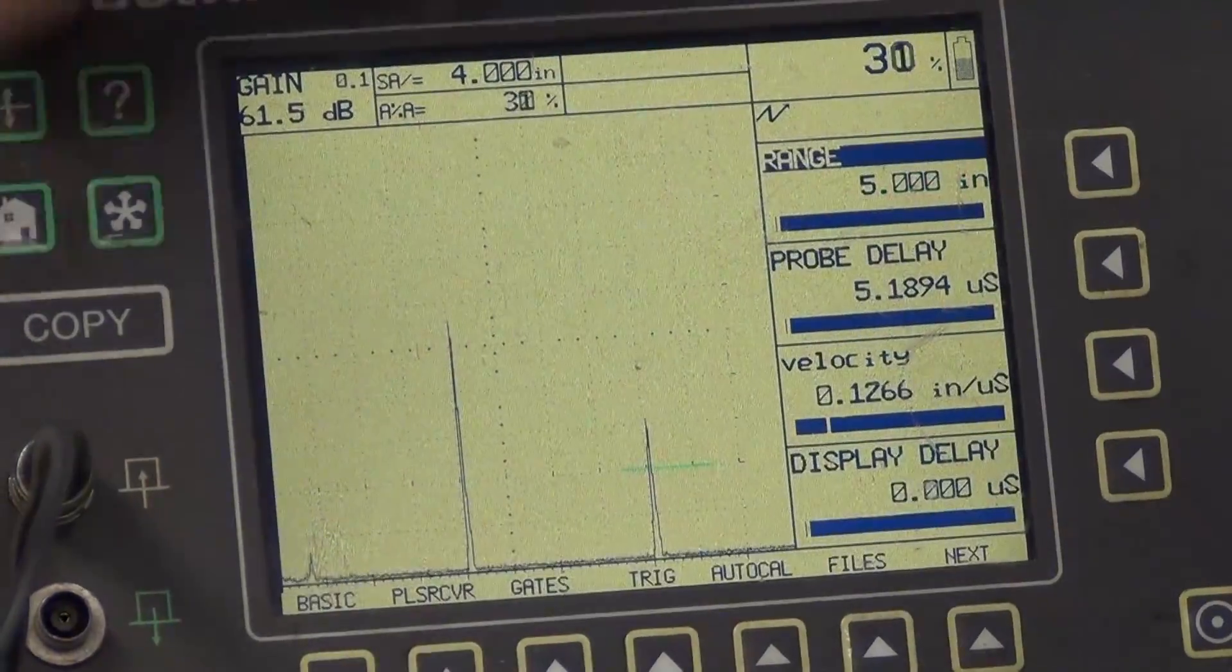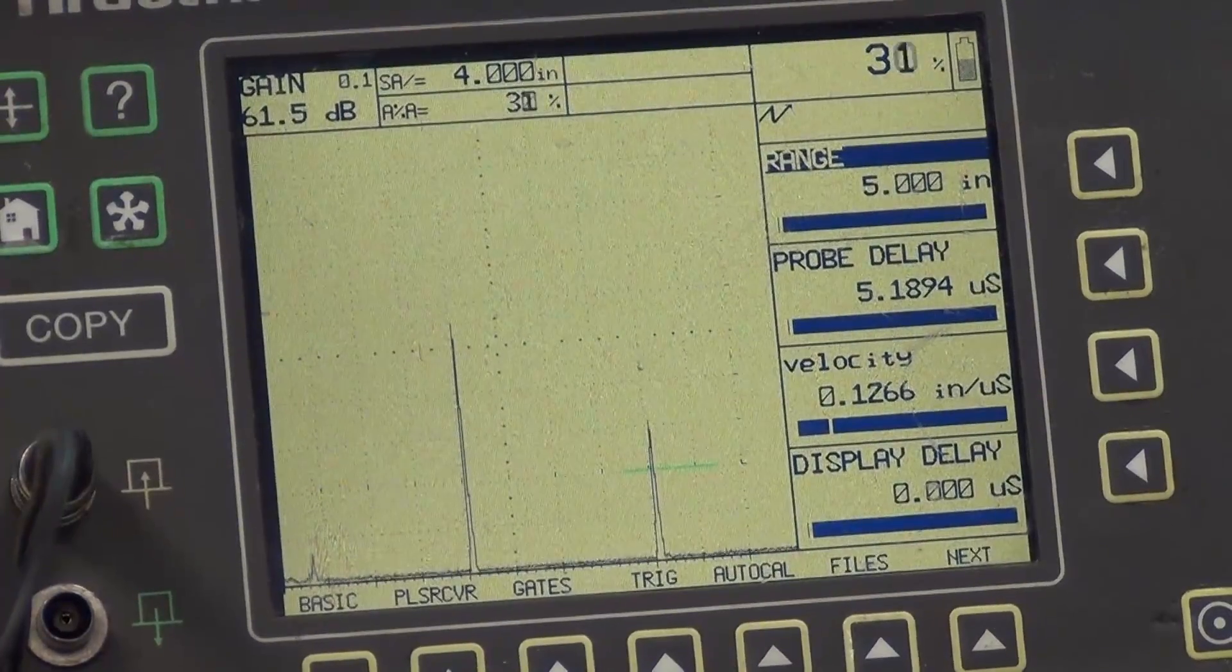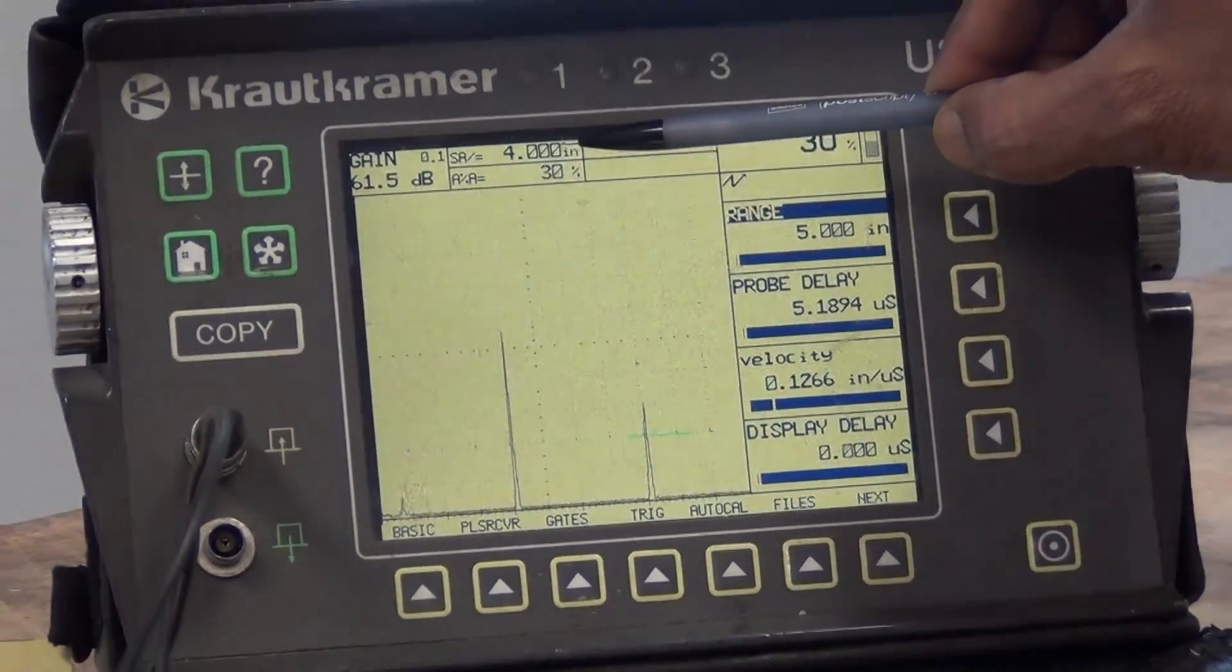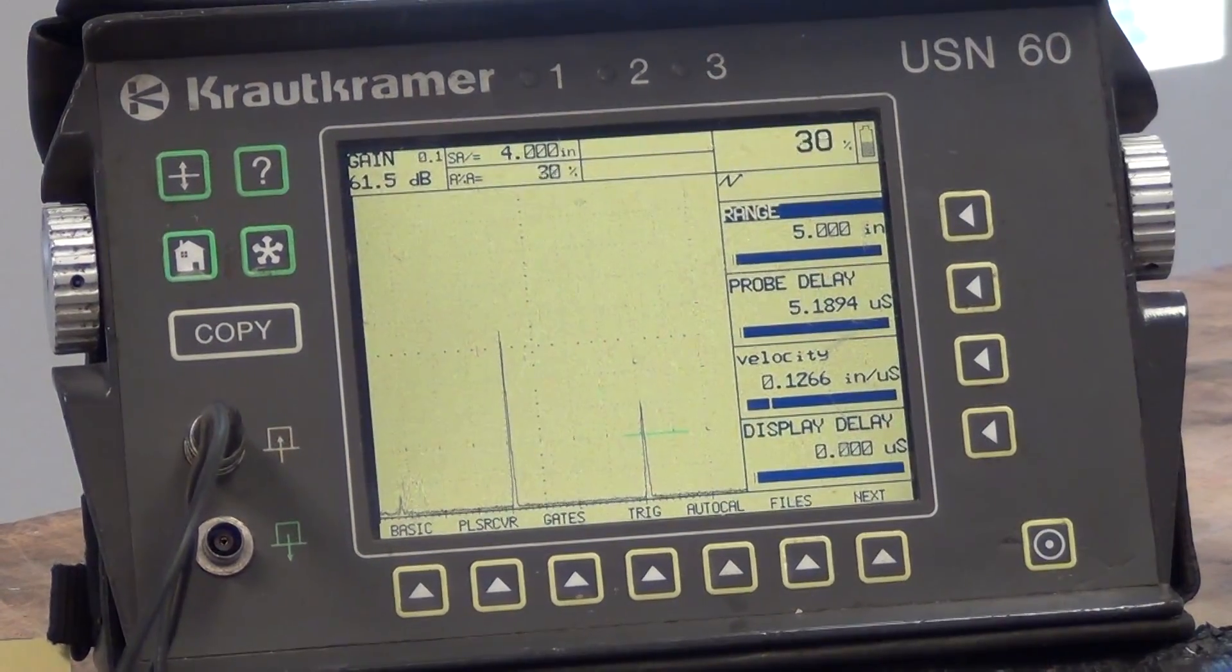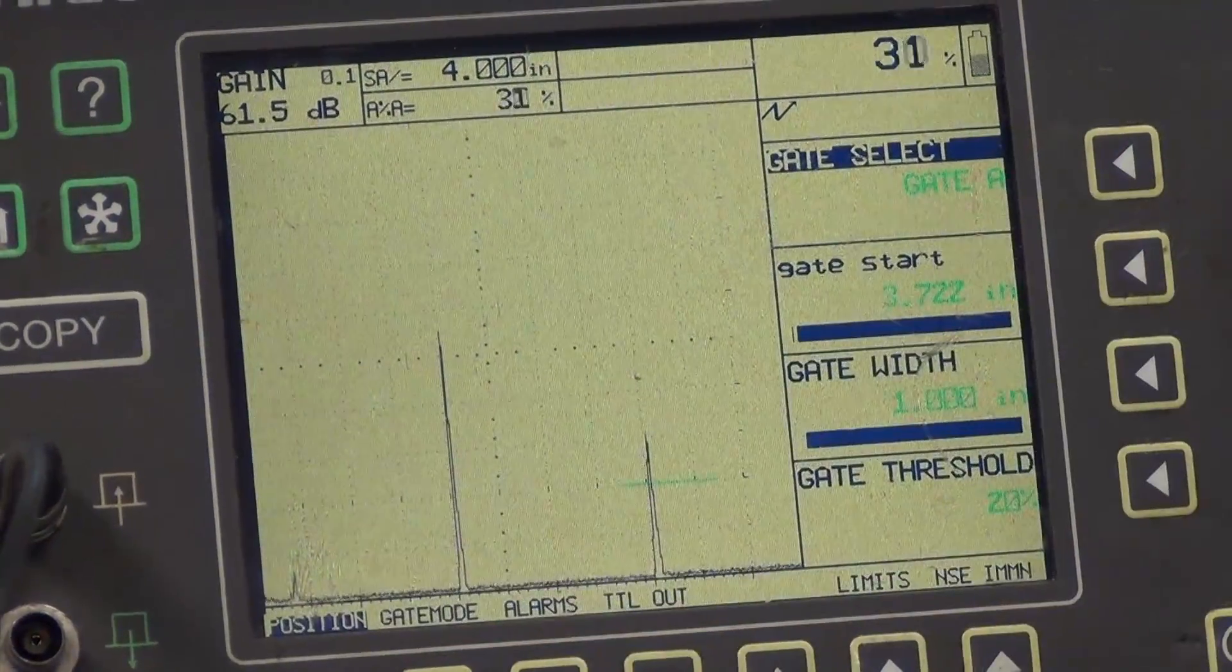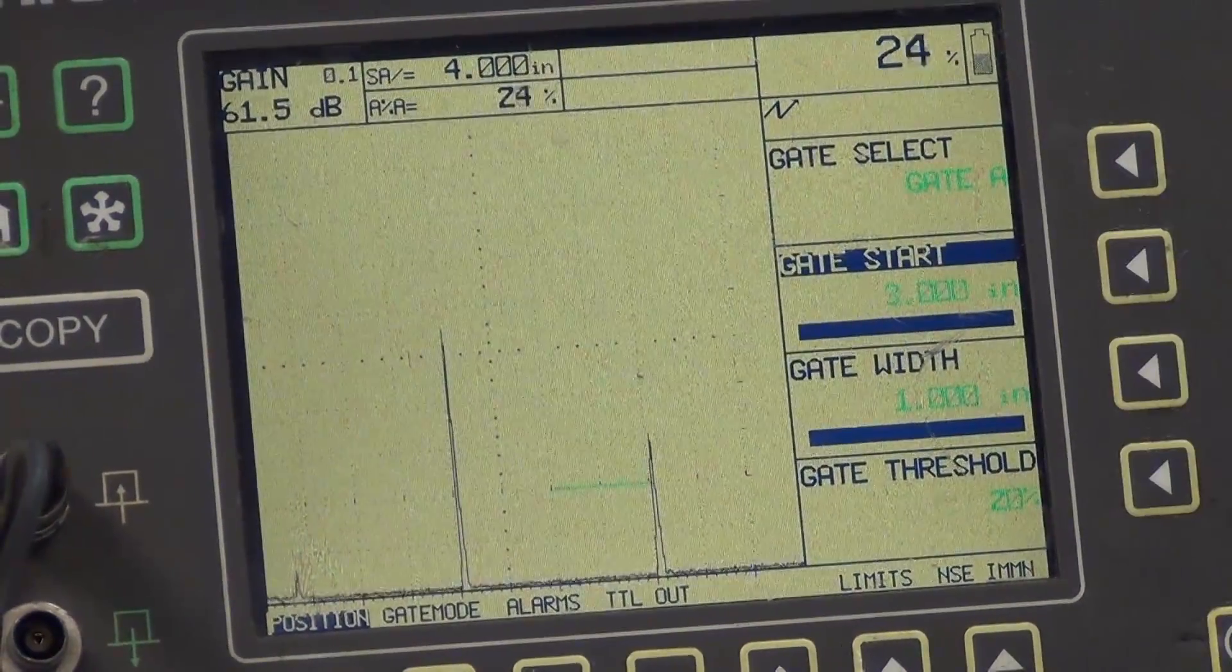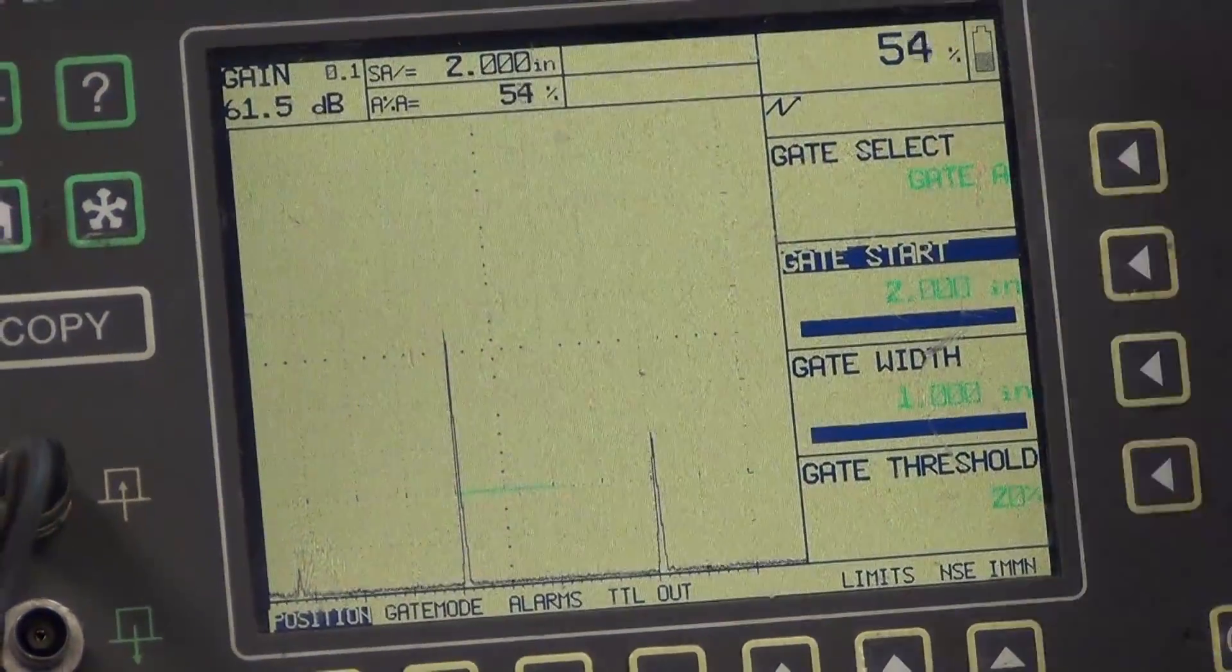So we go back to home. The range is 5 inches 4 inches and we can check the sound path. It's 4 inches here. If I move the gate to the first signal, it should be 2 inches which is right here.